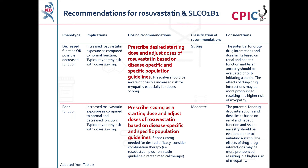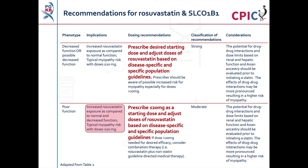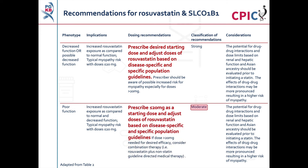These are the CPIC recommendations for rosuvastatin in patients with decreased or poor SLC01B1 function. Patients with decreased or possible decreased function may have increased exposure to rosuvastatin but have a typical risk of myopathy with doses under 20mg; these patients should be prescribed a starting dose of no more than 20mg. Patients with poor function may also have increased exposure but a typical risk of myopathy with doses under 20mg, and should also be prescribed a starting dose of no more than 20mg. This is a moderate recommendation.